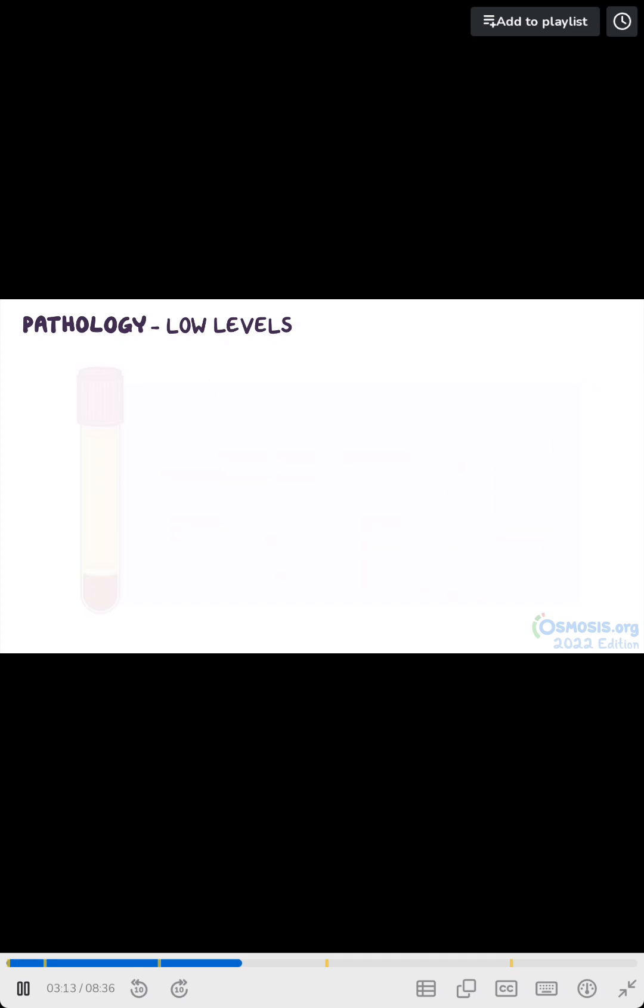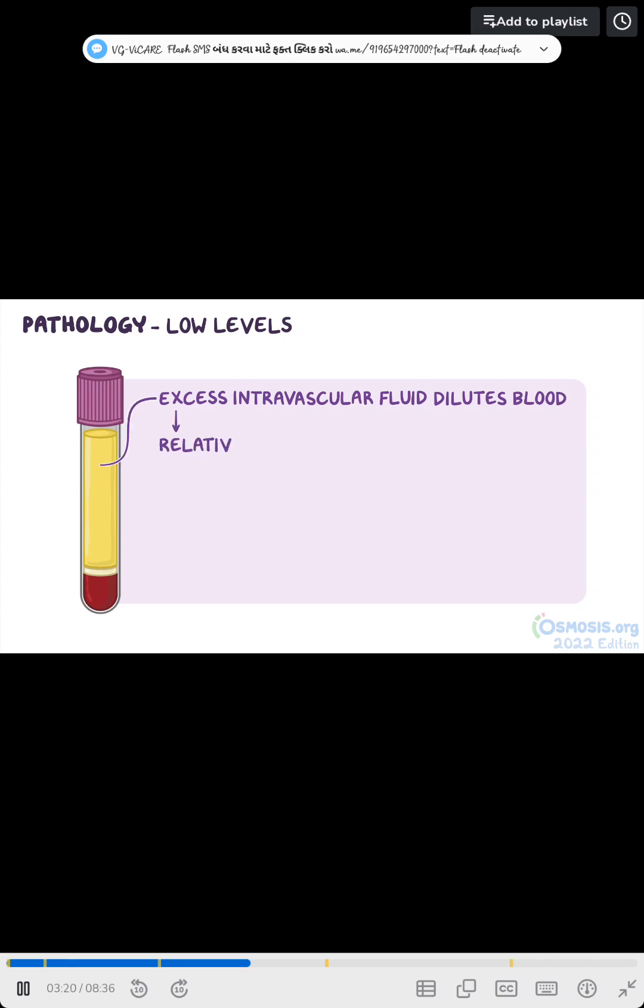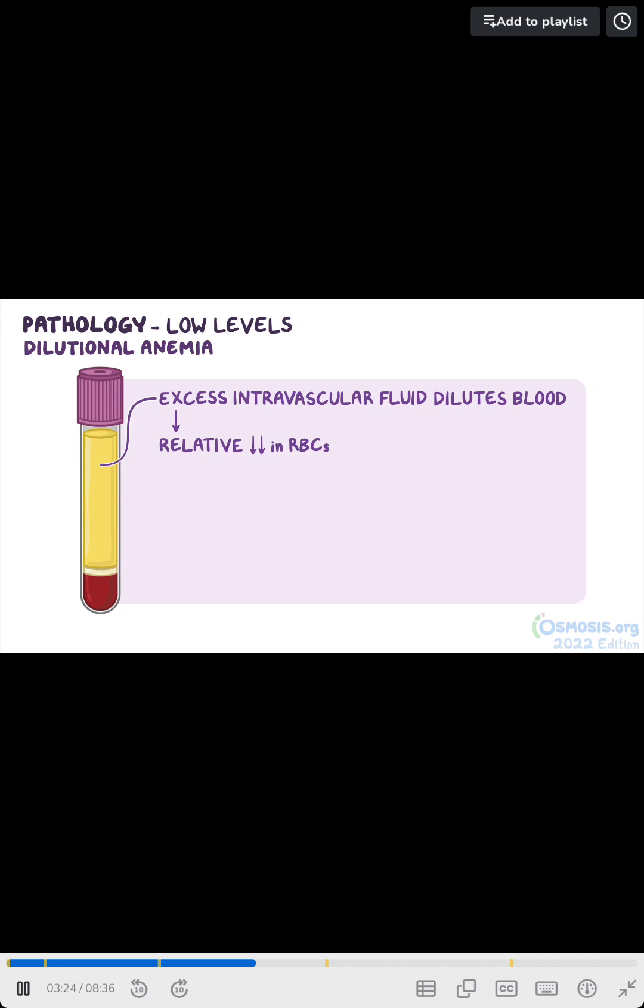Another way hemoglobin and hematocrit can decrease is from fluid overload, where excess intravascular fluid dilutes the blood, causing a relative decrease in RBCs and is referred to as dilutional anemia. This occurs during pregnancy, where blood plasma increases more in relation to RBCs, in which case is referred to as physiological anemia of pregnancy.